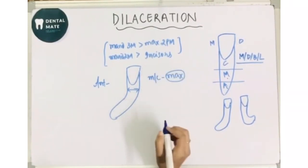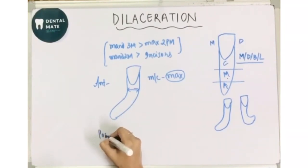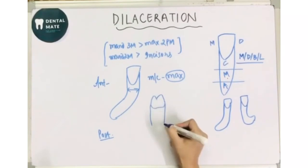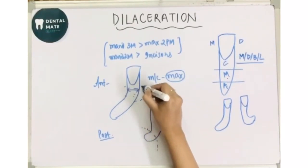Next, if we talk about the posterior teeth. In posteriors, this bend is usually seen in the apical region, and these teeth usually erupt. Because this bend is in the apical portion, it will not restrict the tooth eruption, but here in the coronal portion it will bend, therefore the tooth fails to erupt.